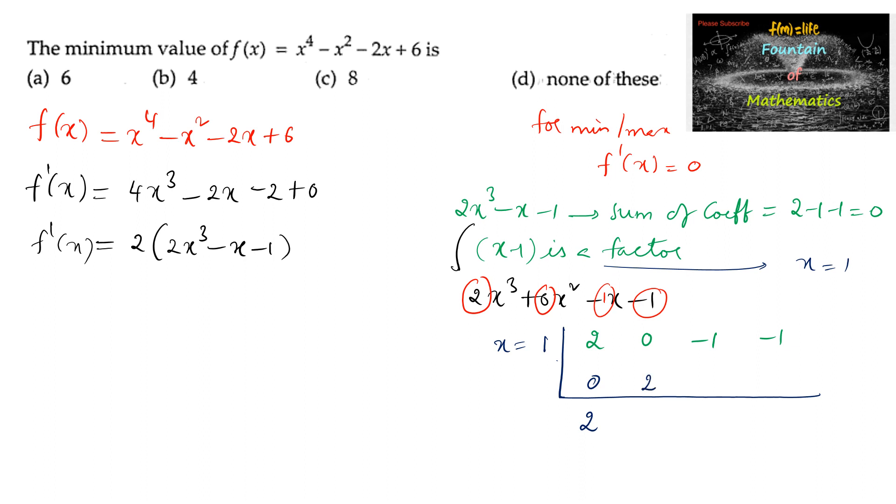1 times 2 is 2. Let us do addition here. 2 plus 0 is 2, and again 0. 1 times 2 is 2. 0 plus 2 is 2. And again 1 times 2 is 2. 2 minus 1 is 1. And 1 times 1.